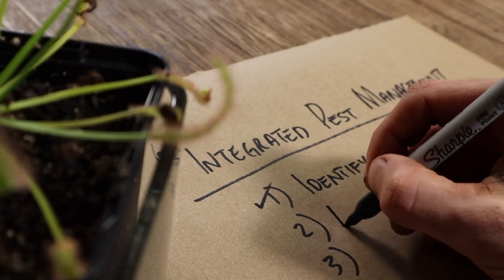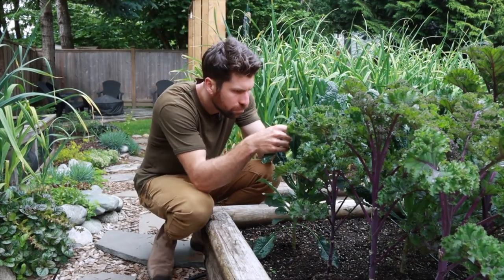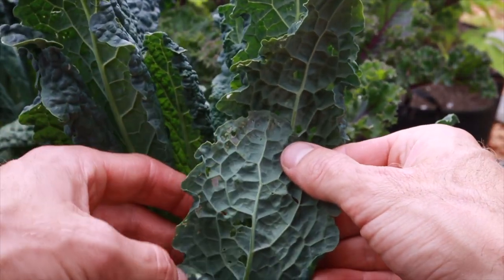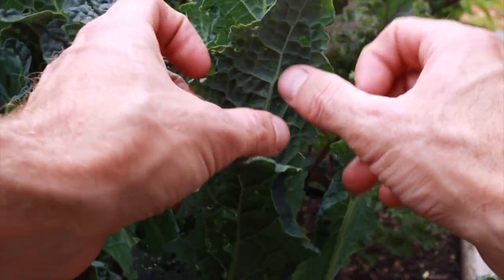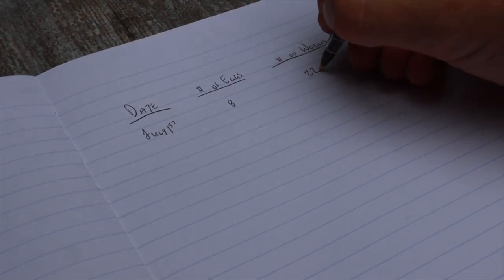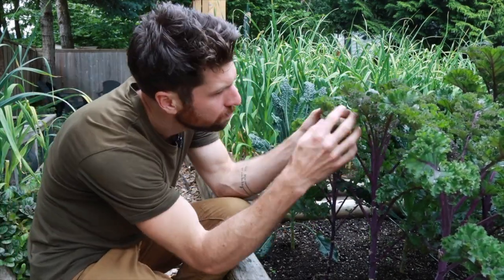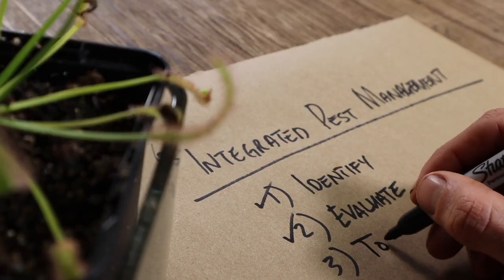Now I can move into step two, which is evaluation. When it comes to evaluation, we want to count up the number of worms and eggs that we find on a particular set of plants — going from one leaf to the next, counting how many eggs and how many small green cabbage worms you can find. Make note of that in a journal so you can use it as a benchmark to see whether the actions you take are effectively decreasing the number of cabbage worms in your garden.